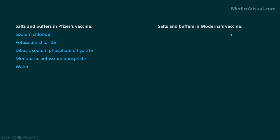Salts and buffers in Moderna's vaccines are tromethamine and tromethamine hydrochloride and the buffers are acetic acid as well as sodium acetate and of course they are also dissolved in water.